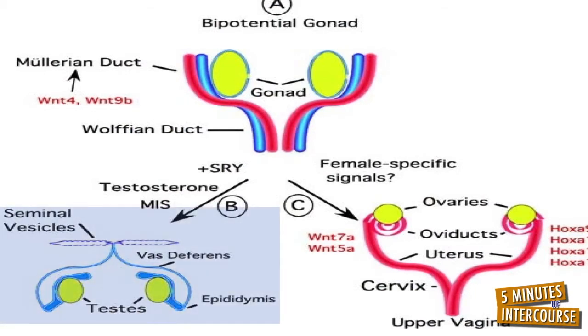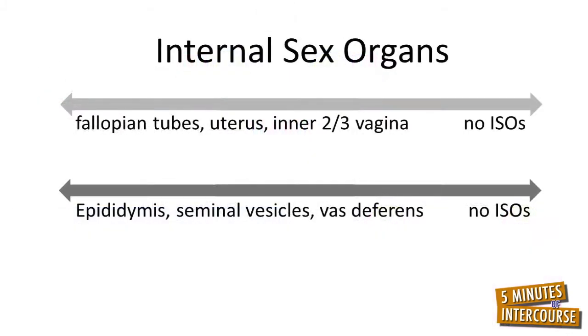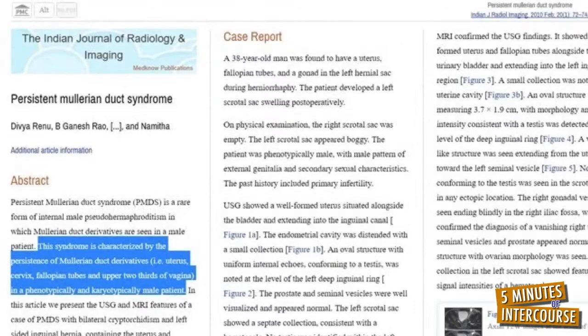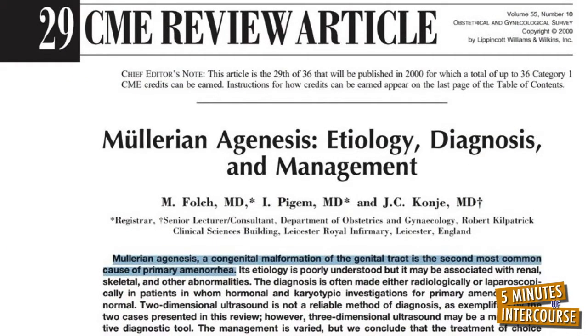Ingredient number four: internal sex organs. About seven weeks after conception, dependent upon levels of testosterone and its respective receptor sites, the epididymis, seminal vesicles, and vas deferens form — or without hormonal intervention, the fallopian tubes, uterus, and inner two-thirds of the vagina form. Without a hormone called Müllerian inhibiting substance, some people have both sets of internal sex organs, and still others, without adequate testosterone or its receptor sites, have neither set. What internal sex organs do you have? Are you sure?